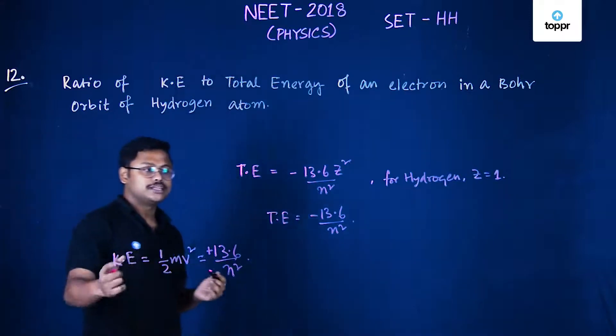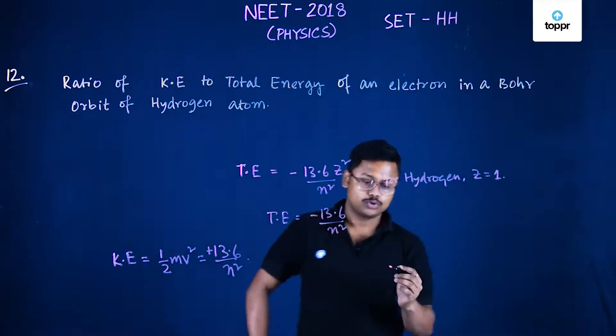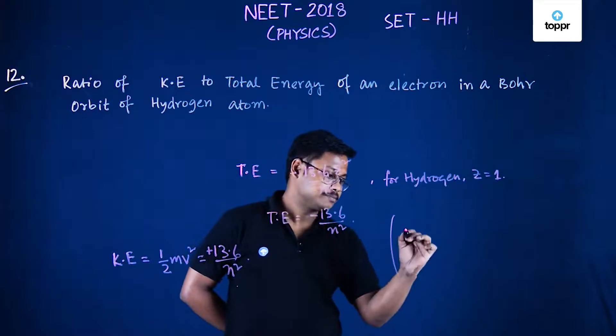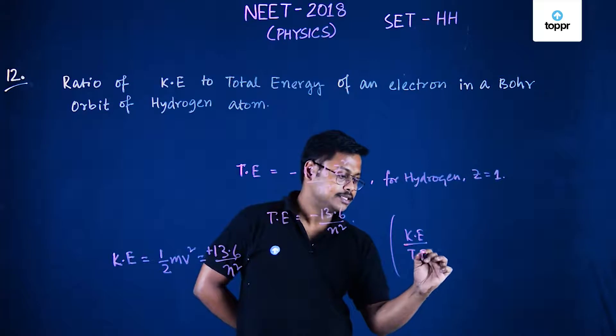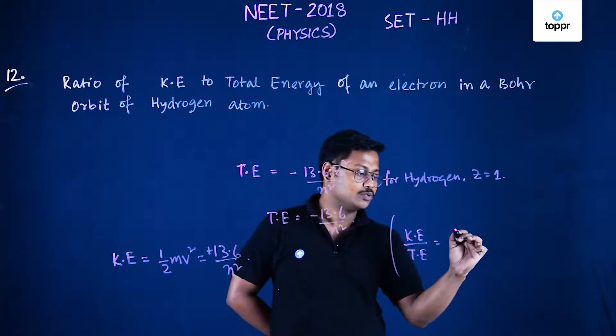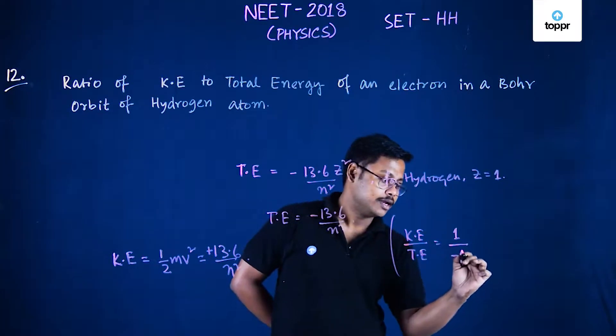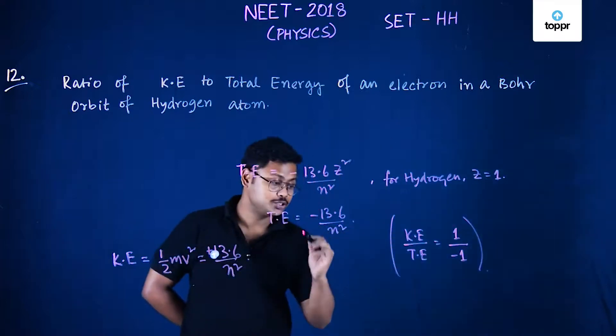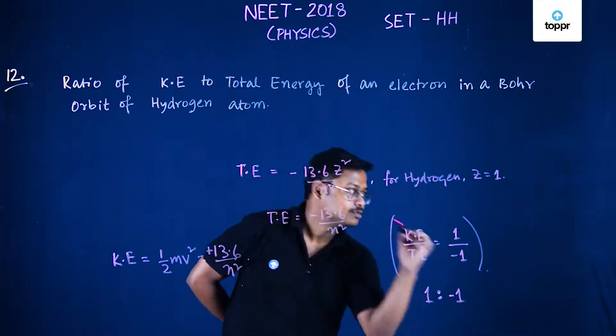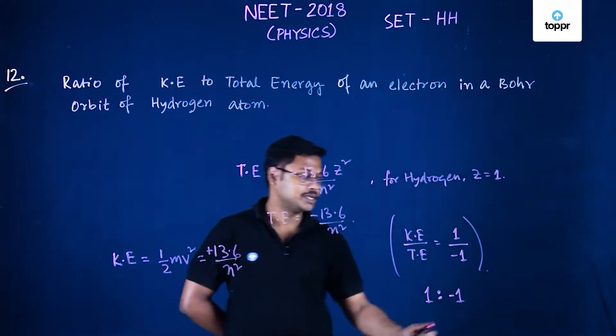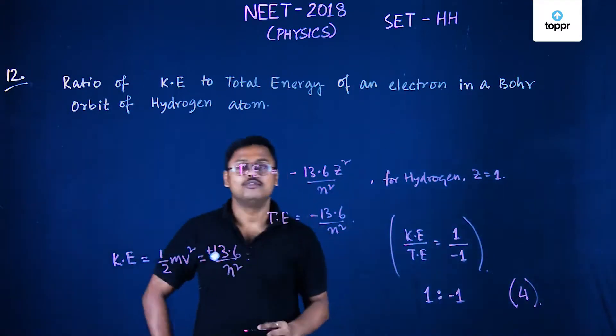So what is the ratio of kinetic energy to total energy? Kinetic energy to total energy will be equals to 1 divided by minus 1. So the ratio will be 1 is to minus 1. So the correct option is option 4.